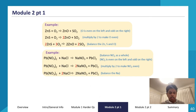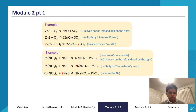Next example: Pb(NO3)2 + NaCl → NaNO3 + PbCl2. We balance nitrate as a whole since it's a polyatomic ion. Nitrate is 2 on the left and 1 on the right — that's odd on the right — so multiply the right by 2: I get 2NaNO3 + PbCl2. Now I have 2 sodiums on the right, so I put 2 in front of NaCl. Checking: 1 lead each side, 2 nitrates each side, 2 sodiums each side, 2 chlorines each side — all balanced. Balanced equation: Pb(NO3)2 + 2NaCl → 2NaNO3 + PbCl2.